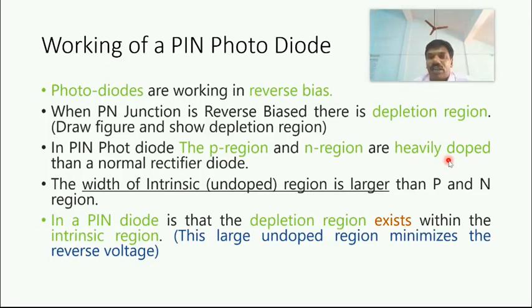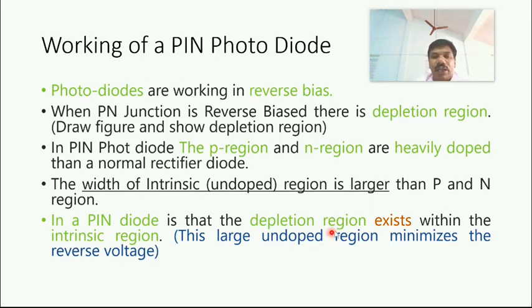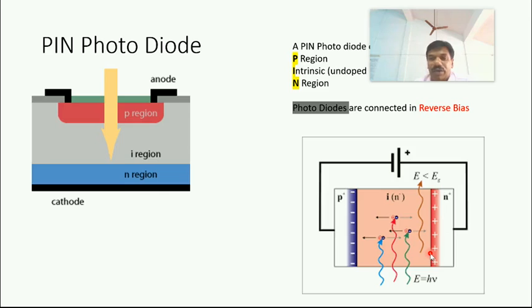The PIN photodiode P region and N region are heavily doped - that is P plus and N plus region. The width of the intrinsic region represents the PIN. The width of the intrinsic region is larger than P and N region. Width of the intrinsic region is comparatively higher than P plus region and N plus region. The depletion region exists in the undoped or intrinsic or lightly doped intrinsic region. The depletion region is formed here itself.